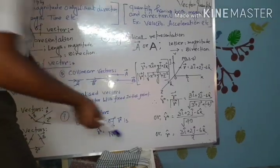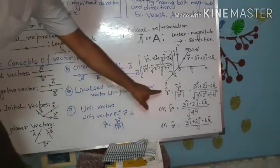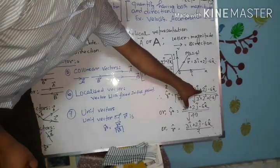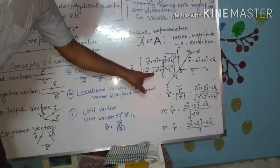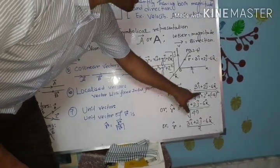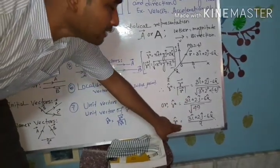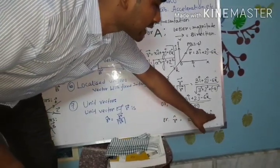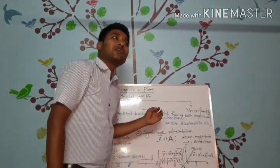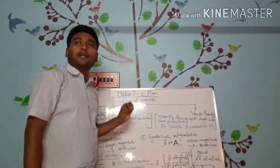Now, determine the unit vector of this. The formula is the given vector divided by its own magnitude. So R-cap equals (3·i-cap plus 2·j-cap minus 6·k-cap) divided by the magnitude, which is root over of 3-squared plus 2-squared plus (−6)-squared. By proper calculation, we get the unit vector as (3·i-cap plus 2·j-cap minus 6·k-cap) divided by 7. This is a very important topic: finding the unit vector — whenever a vector is divided by its own magnitude, we get the unit vector of that vector.